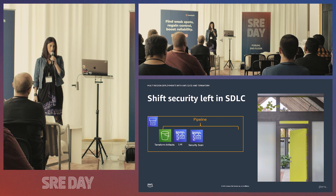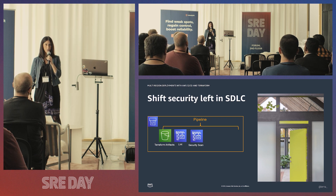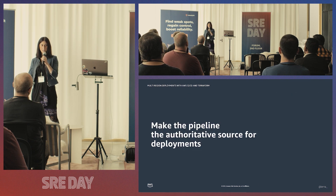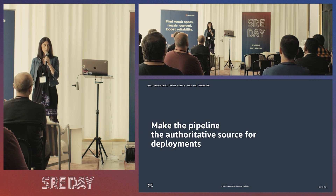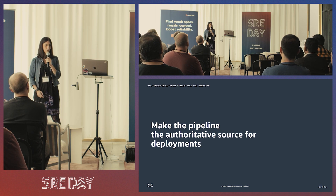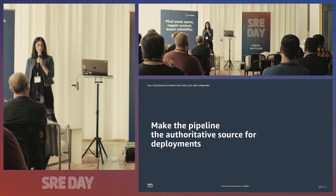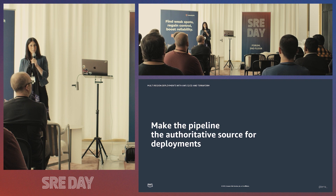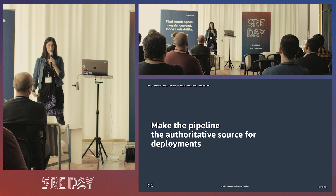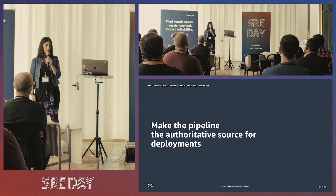This is about catching open doors early — shifting security left in the SDLC. To ensure you can repeat the same deployment over and over again, one approach is to have only one entity in charge: make the pipeline the authoritative source for deployments. That means locking down access through other means — users shouldn't be able to make changes through the console, API, SDK, or any other entity. Only the pipeline makes those changes. That's how we achieve repeatability.